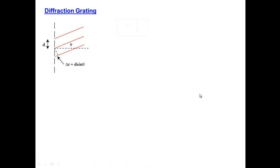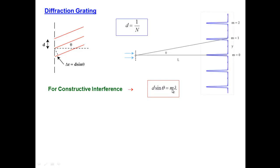So what does that look like? Well, for constructive interference, d sine theta is an integer multiple of the wavelength, where m is any integer.